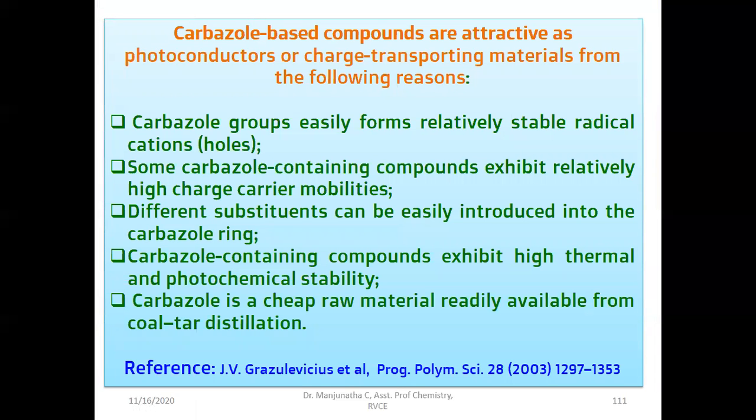Why carbazole functional group as a chromophore is being used for photoconducting polymer? It is because carbazole groups easily form relatively stable radical cations. It means excitons can be easily created in case of carbazole groups. And they exhibit relatively high charge carrier mobilities, they can allow the charge to flow easily through the material. And another important advantage is that different substituents and functional groups can be substituted to the carbazole ring. And it is highly thermally and photochemically stable. It will not decompose in the presence of UV light. And it is also a cheap material readily available from coal tar distillation. These are the information obtained from this journal published by this group.